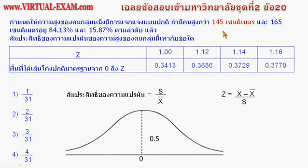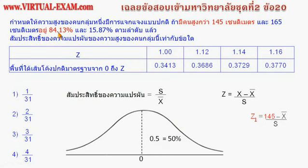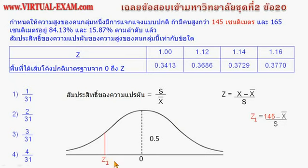แปลงความสูง 145 cm ให้เป็นค่า Z โดยแทน X ด้วย 145 cm สูตรนี้ยังไม่สามารถคำนวณต่อได้ เพราะไม่รู้ค่า X-bar และค่า S สมมติว่าค่าที่คำนวณได้คือ Z1 ซึ่งจะเป็นจุดหนึ่งบนแกนนอน แต่ยังระบุไม่ได้ว่าอยู่ที่ไหน โจทย์ให้ข้อมูลว่ามีคนสูงกว่า 145 cm อยู่ 84.13% ดังนั้น Z1 น่าจะอยู่ทางซ้ายของศูนย์